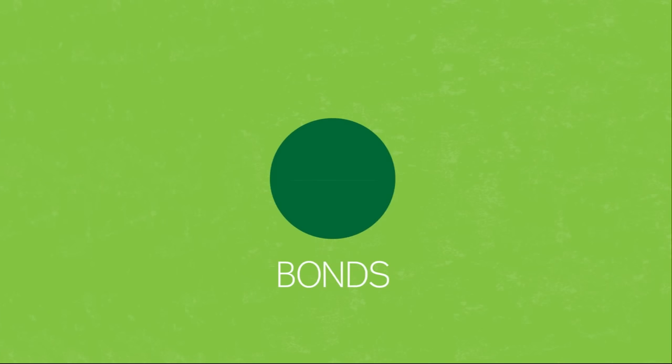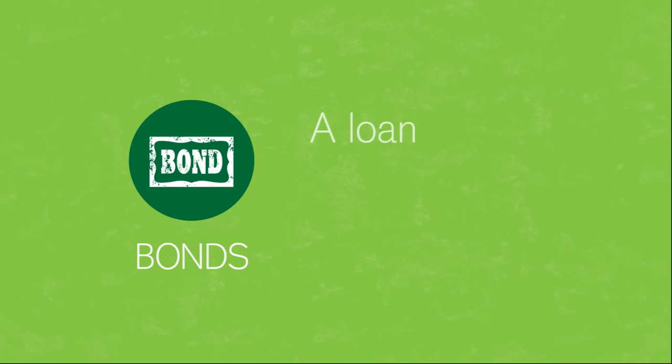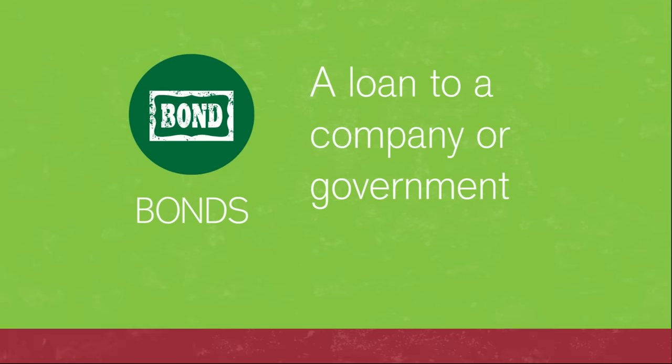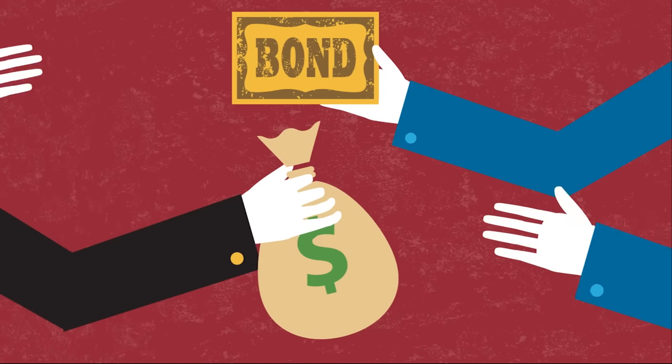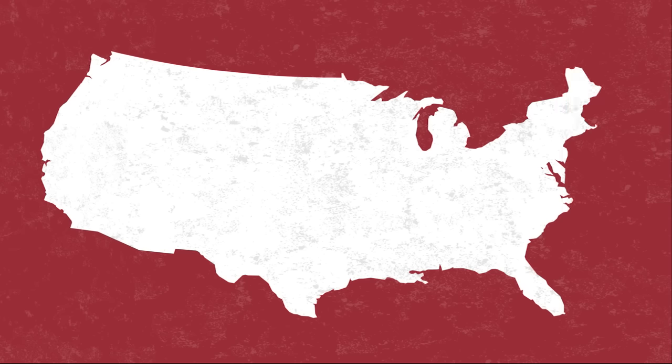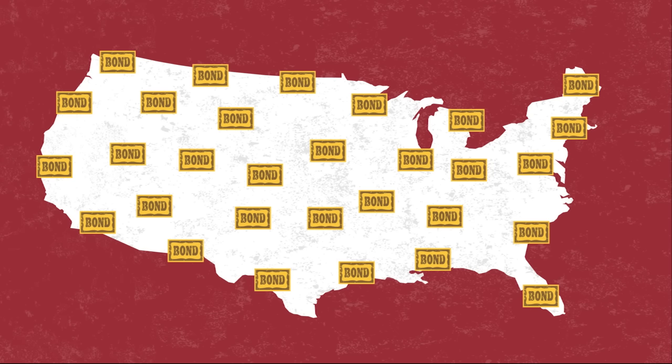Next up, bonds. Bonds are just a loan to a company or government. They borrow by selling a bond, which is simply a promise to repay the buyer in a fixed number of years at a fixed interest rate. When you hear about the US government borrowing money, have you ever wondered who they borrow from? Chances are, it's you through the investments you make in bonds.